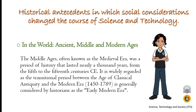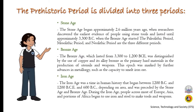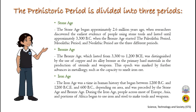Historical antecedents show how social considerations change the course of science and technology. The Middle Ages, often known as the medieval era, was a period of history that lasted nearly a thousand years, from the fifth to the 15th centuries CE, widely regarded as the transitional period between classical antiquity and the modern era. The prehistoric period is divided into three periods: the Stone Age, Bronze Age, and Iron Age.